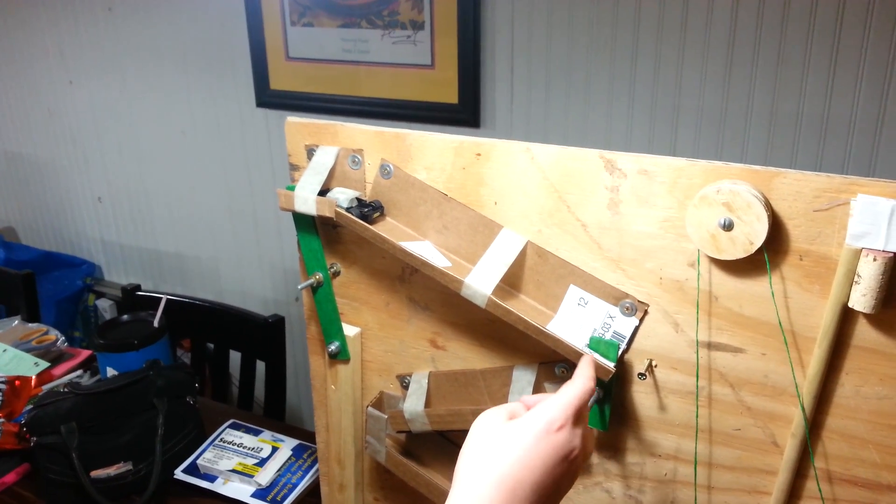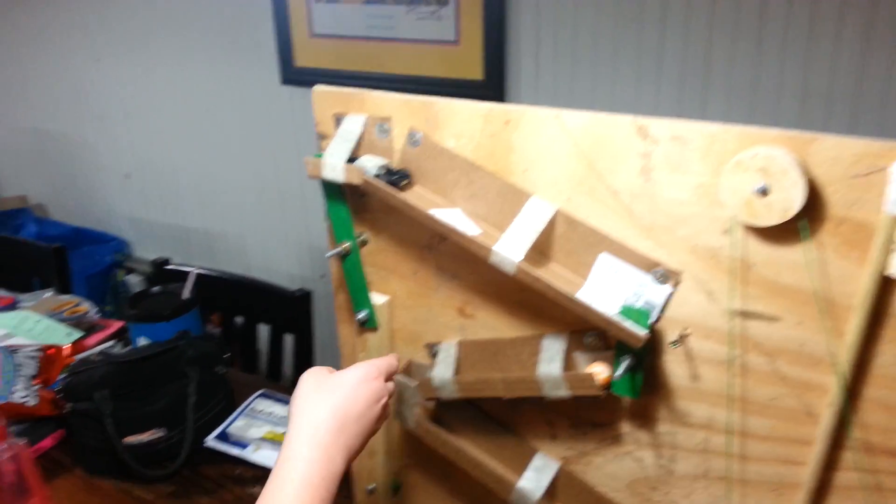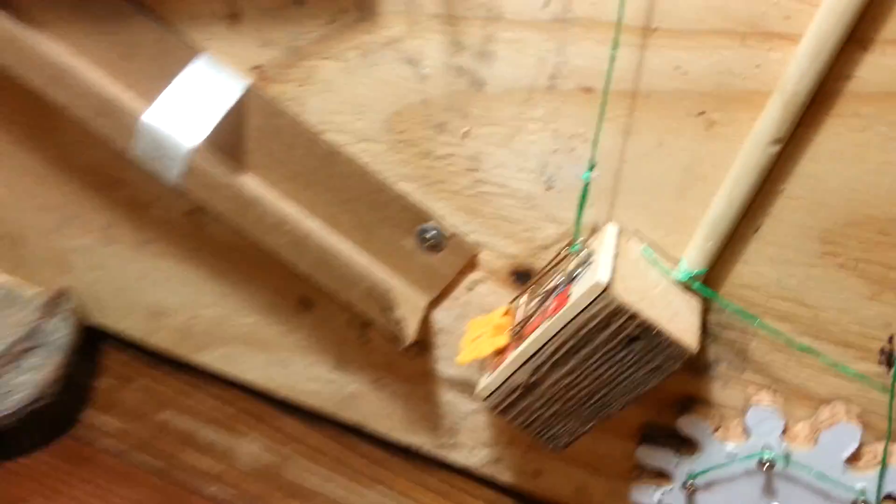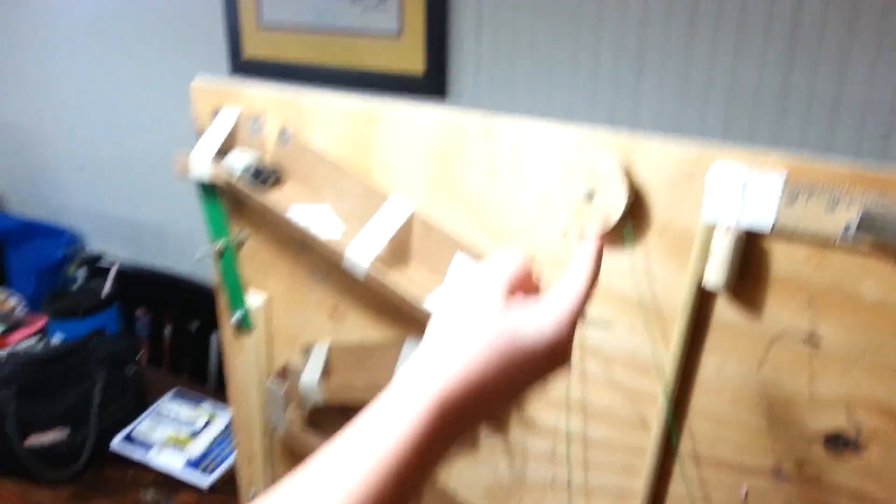It'll roll down this inclined plane, hit a lever to knock this ball down more inclined planes, hit this mouse trap, which is also a lever, which goes over a pulley.